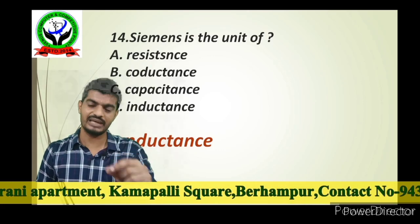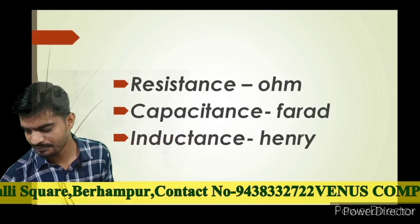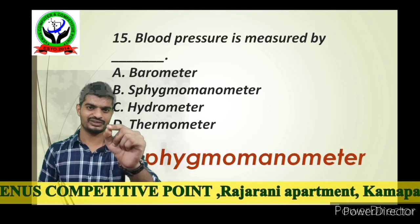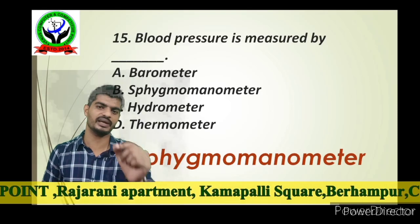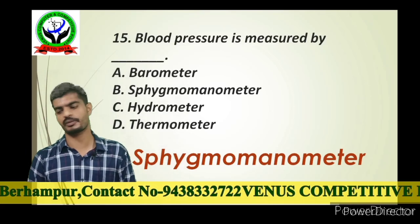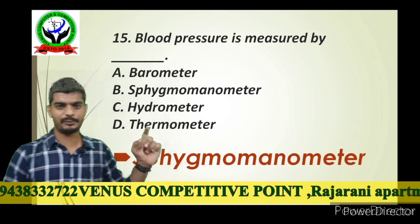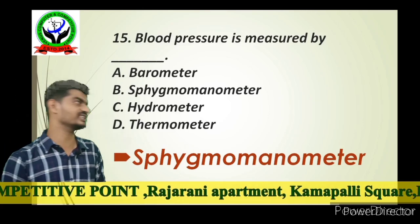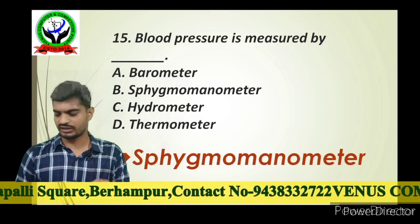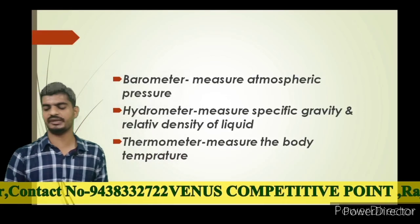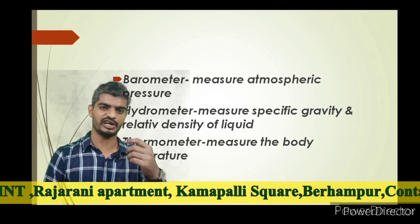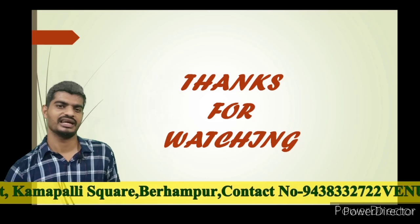Blood pressure is measured by a sphygmomanometer. Normal blood pressure is 120/80 mmHg. The hydrometer measures specific gravity and relative density of liquids. The thermometer measures body temperature.